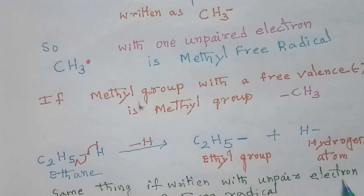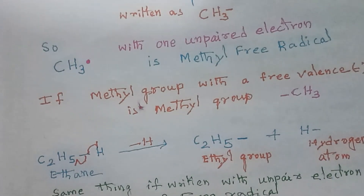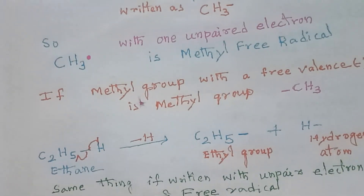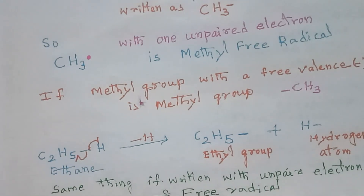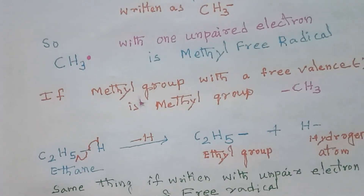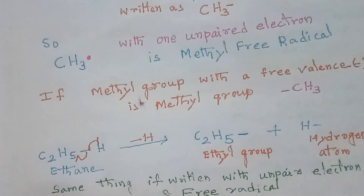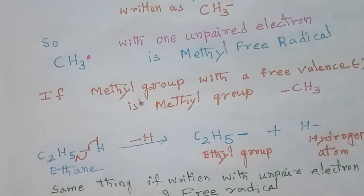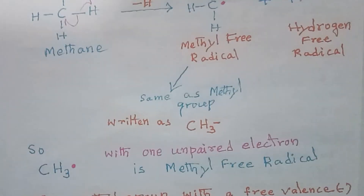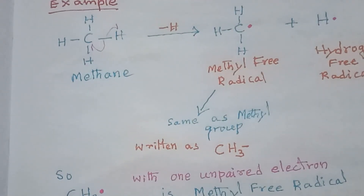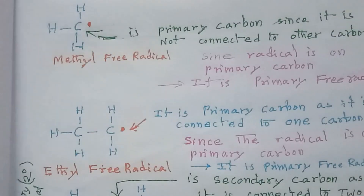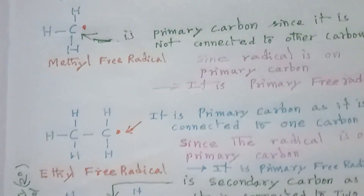If we write it with an unpaired electron, it is called a free radical. C2H5 with one unpaired electron is the ethyl free radical, and hydrogen with one unpaired electron is the hydrogen free radical. So don't get confused between free radicals and groups — they are one and the same.